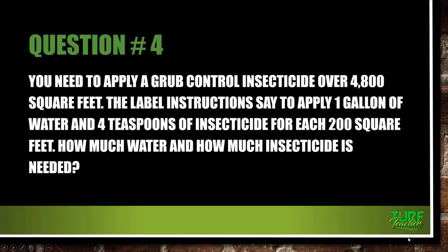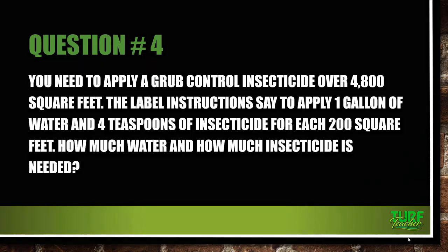Question number four: you need to apply a grub control insecticide over 4,800 square feet. The label says to apply one gallon of water and four teaspoons of insecticide for each 200 square feet. How much water and how much insecticide is needed? Let's express the insecticide in cups. This is basically a two-part question.